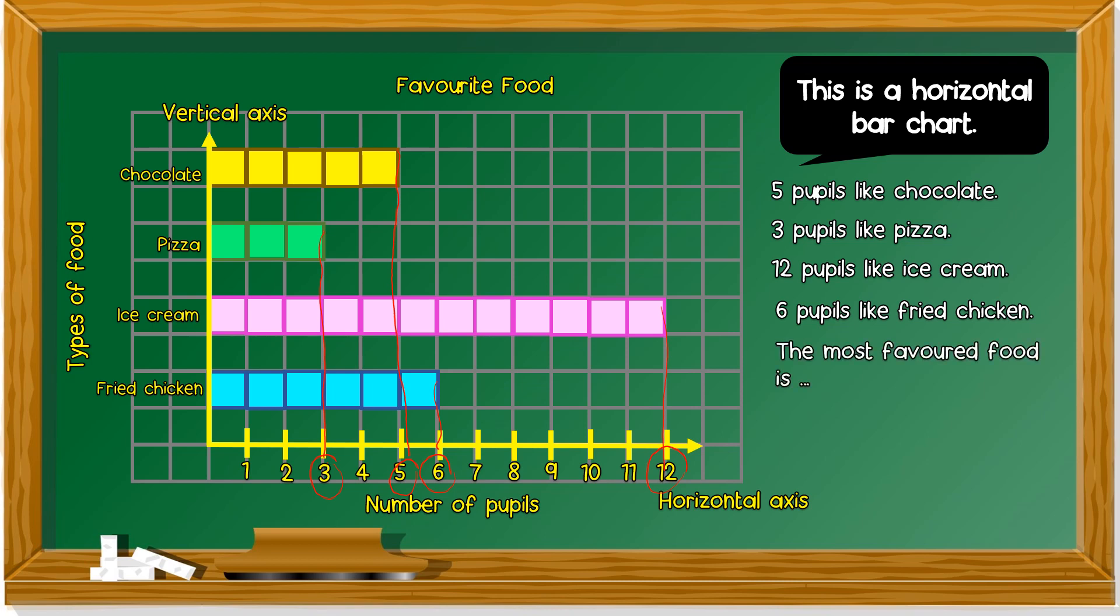The most favorite food is Makanan yang paling disukai. Paling ramai orang. What is it? Ice cream. Because ice cream. There are 12 pupils.